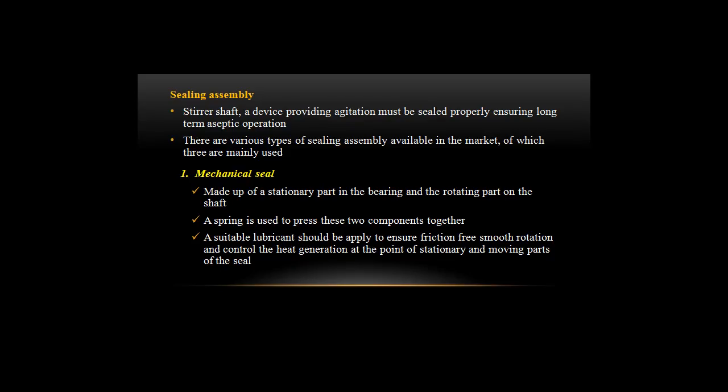Sealing assembly - stirrer shaft: a device providing agitation must be sealed properly to ensure long-term aseptic operations. Three types of sealing assembly are mainly used. Mechanical seal: made up of a stationary part in the bearing and a rotating part on the shaft. A spring presses these two components together, and a suitable lubricant is applied to ensure friction-free smooth rotation and control heat generation at the point of contact.